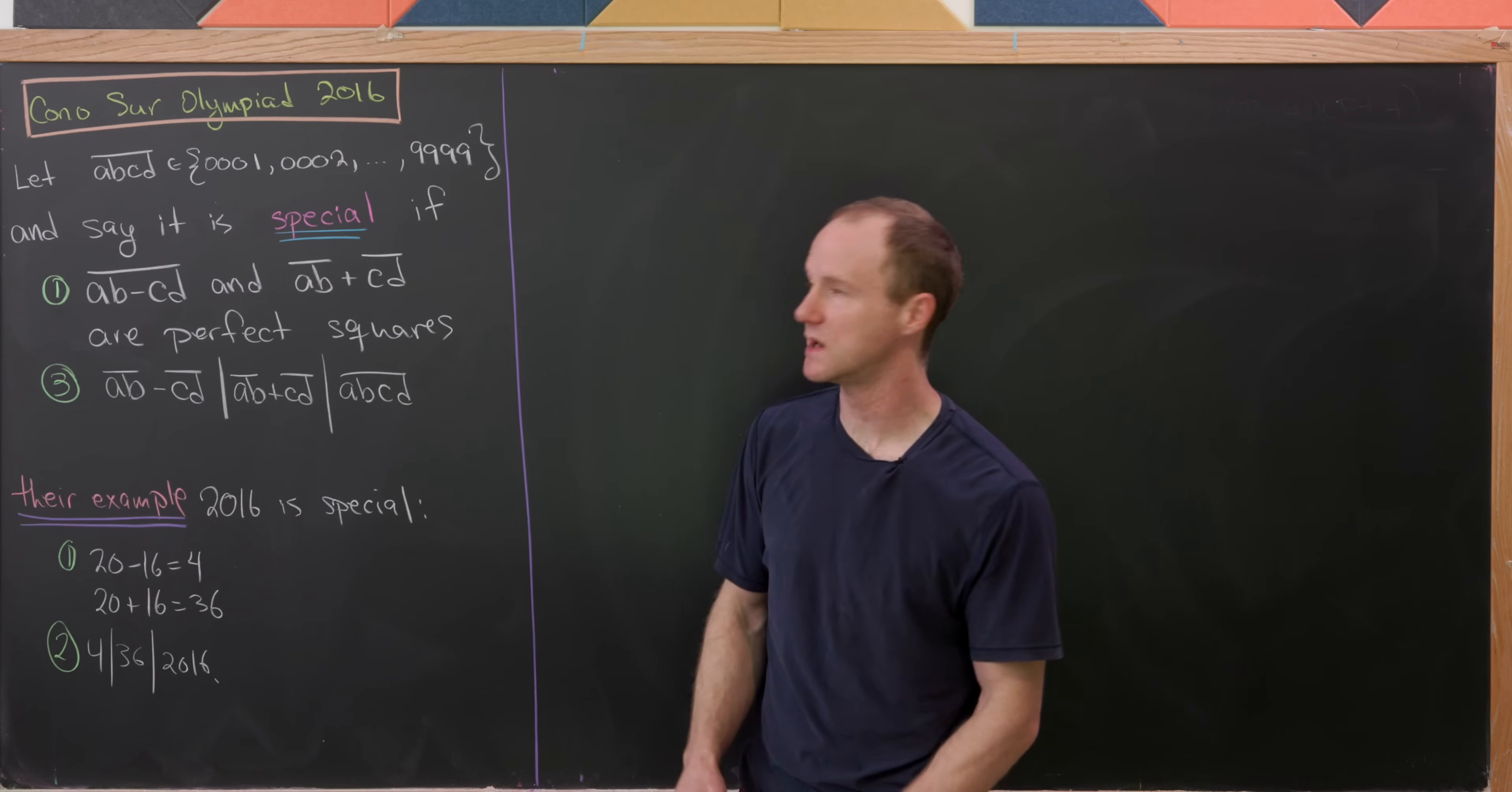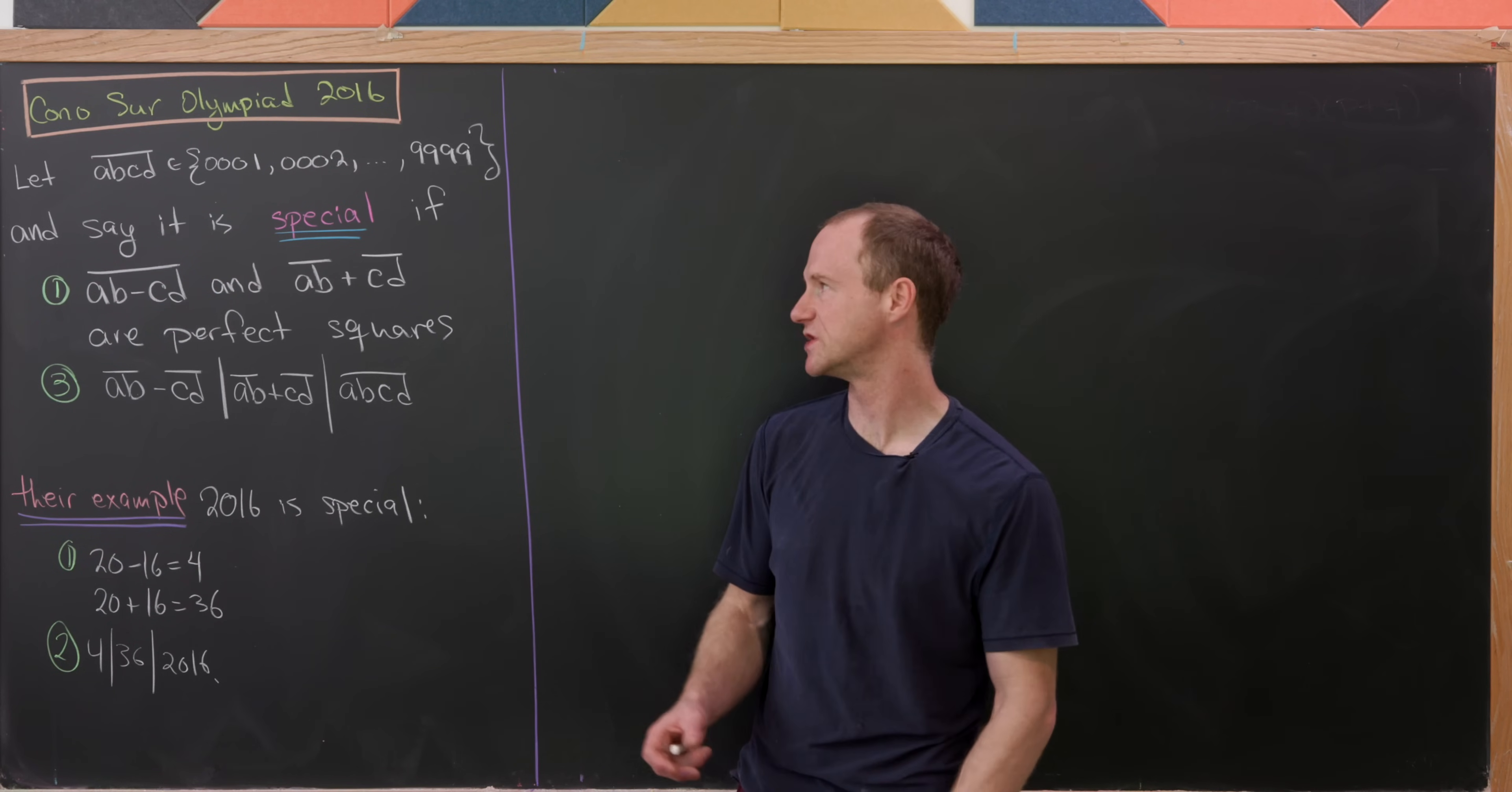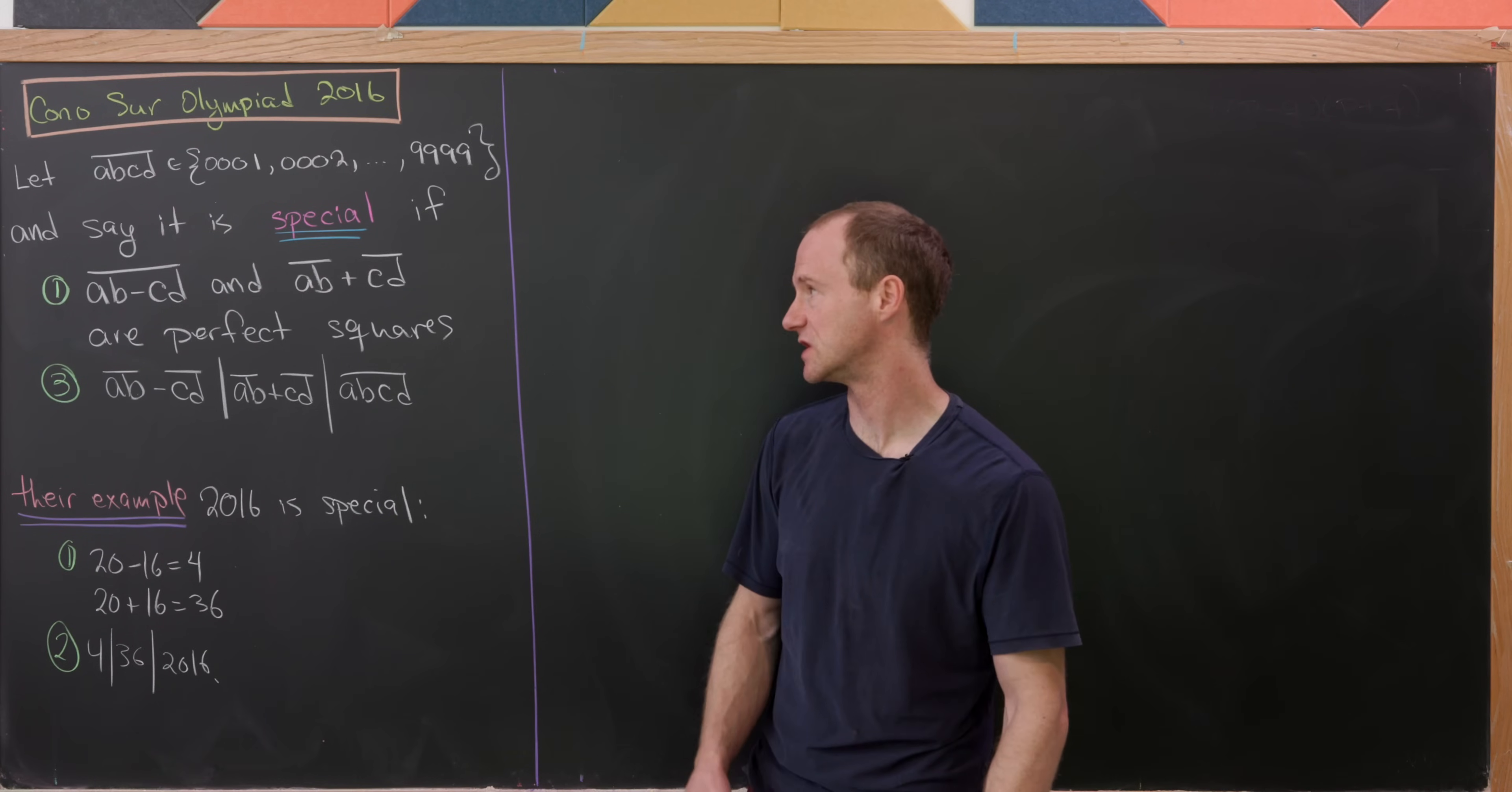Necessarily those digits ABC and D come from the set 0, 1, 2, up to 9. So it's a one-digit, two-digit, three-digit, or four-digit number.